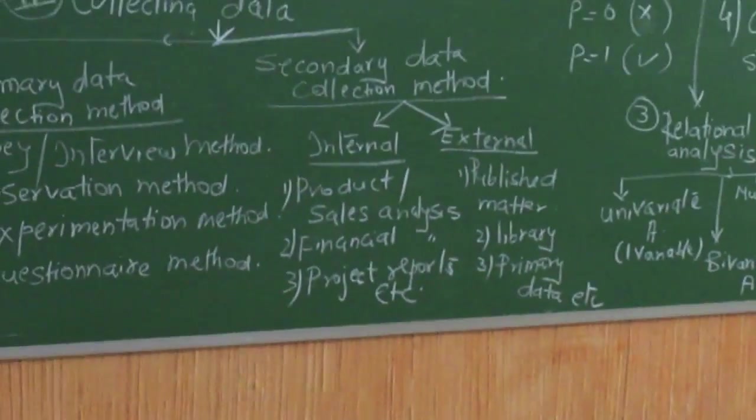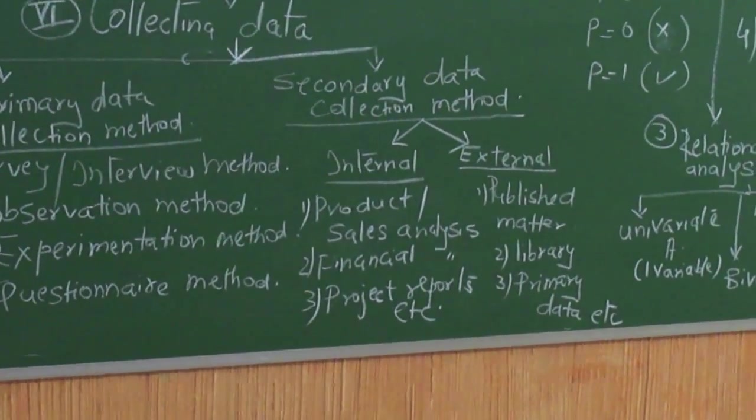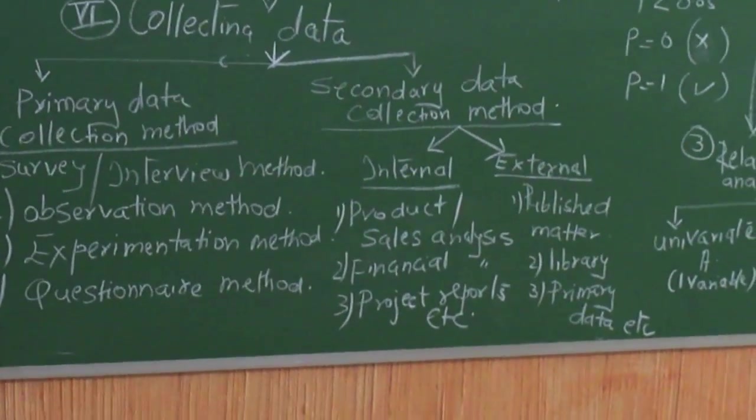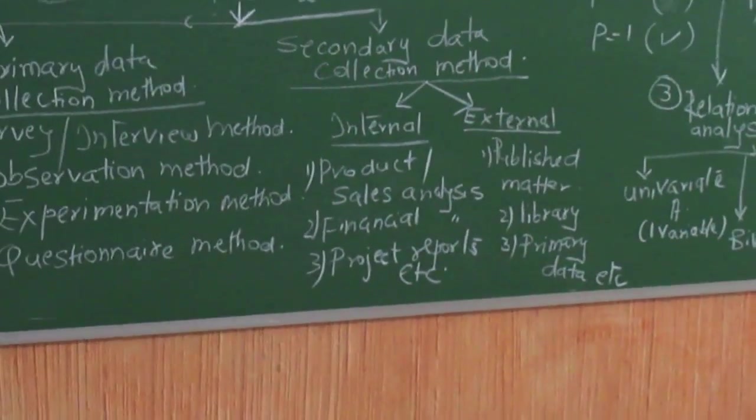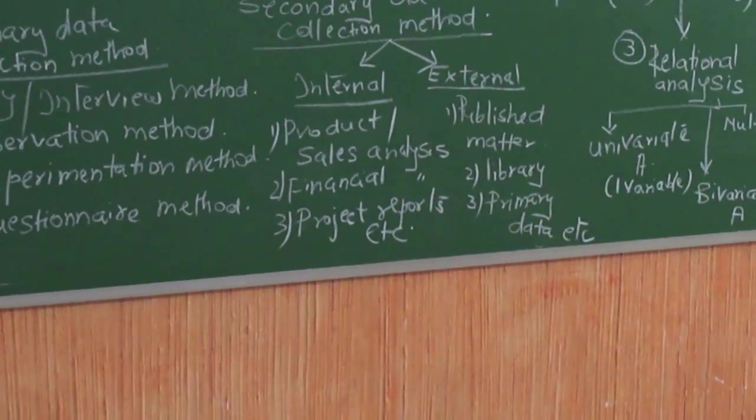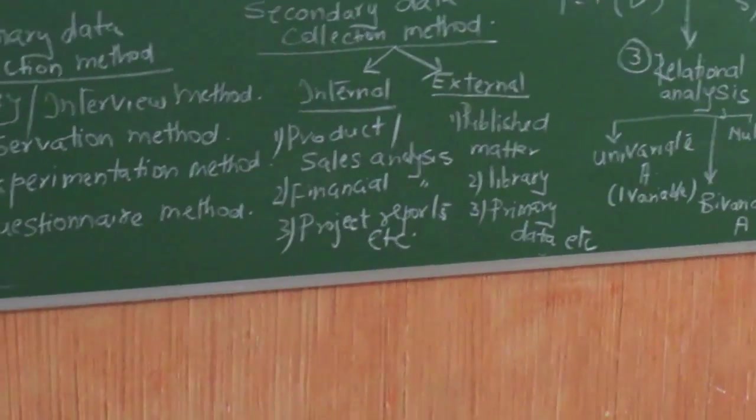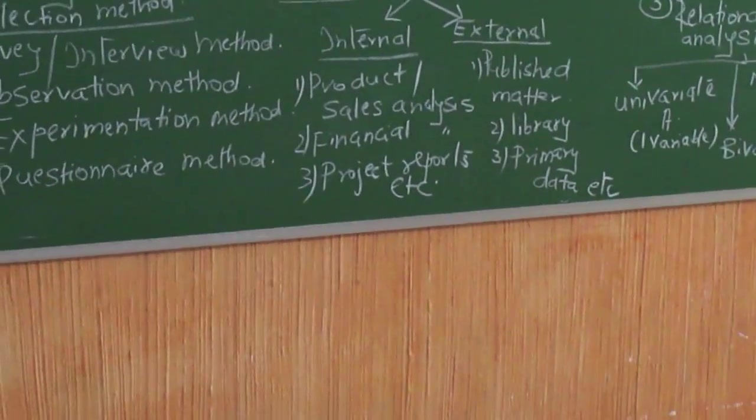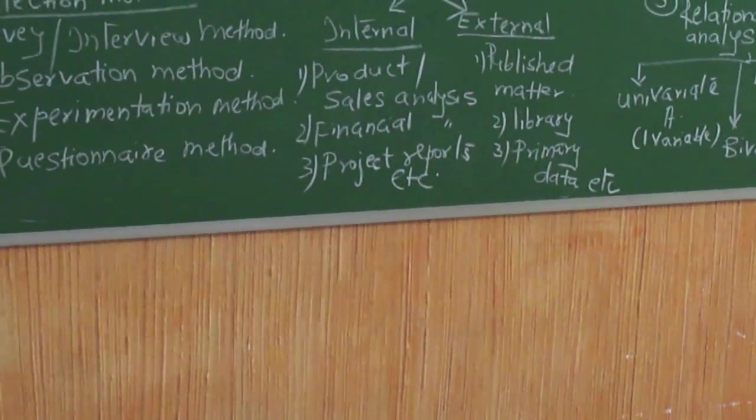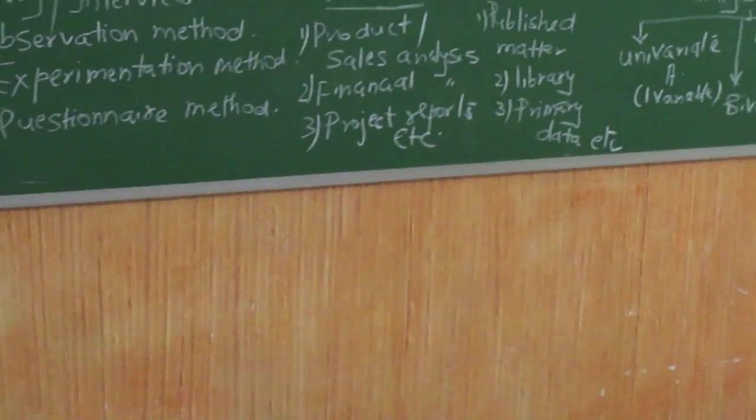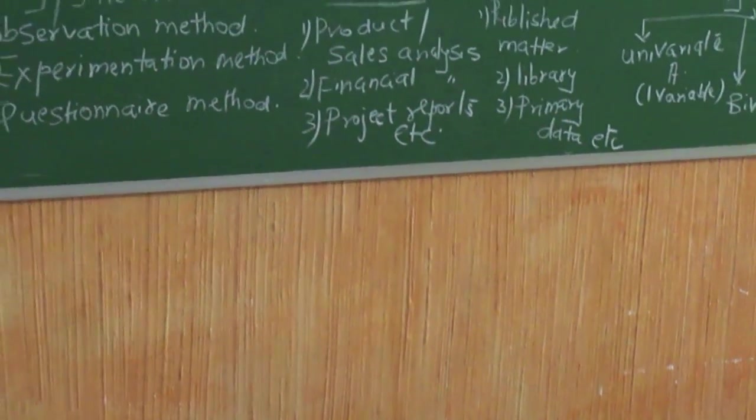Then comes the secondary data collection method. It is very difficult, very time consuming, money consuming to do primary data all the time. So one falls back on secondary data collection method. If it is done for the office, you can do it internally and look at earlier product sales analysis, do the financial analysis, go through the project reports done so far.